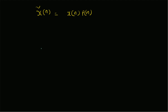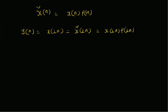Now, our y(n), which is basically x(2n), will also be equal to x̃(2n), which is obviously equal to x(2n)·p(2n). So, x(2n) is equal to x̃(2n), and that is the meaning of this downsampling process.